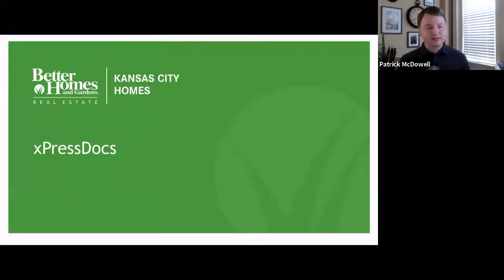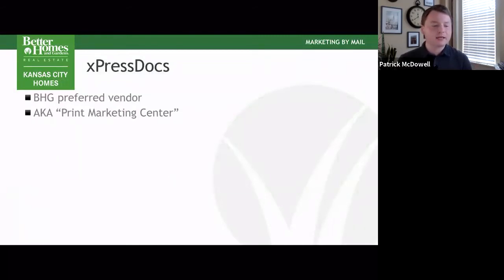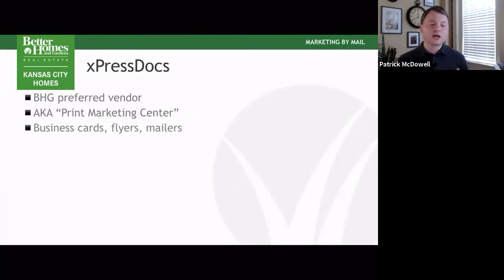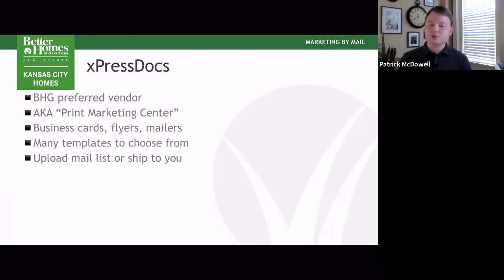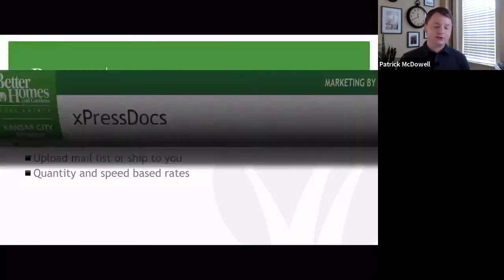We're also going to talk about ExpressDocs — the print marketing center inside the Greenhouse. ExpressDocs is the name of a company; they're for-profit and have nothing to do with Better Homes and Gardens — they're just who BHG has chosen to contract with as their print marketing center. You can find them in the Greenhouse once you figure out how to log in. From there you can choose the print marketing center. That's where a lot of our brokers get your business cards. They also have options for flyers, mailers, and they have a really cool newsletter I'm going to show you today. They've got a lot of templates to choose from. ExpressDocs is based in Dallas — they're very fast.